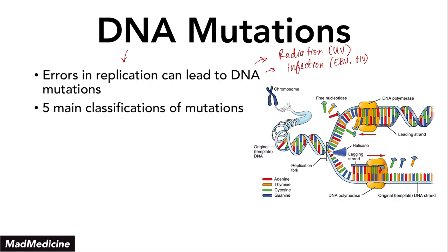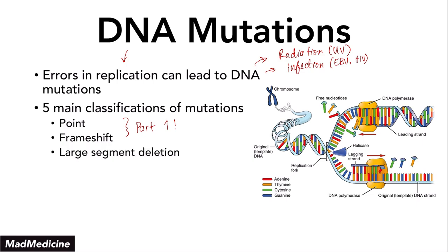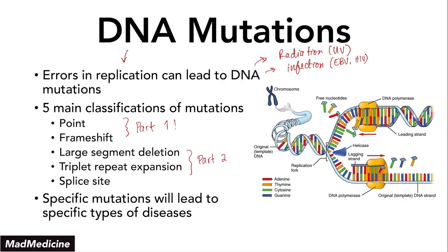When it comes to DNA mutations, there are five main classifications you need to understand. The first is point mutations, the second is frameshift mutations, and these two have already been discussed in part one of our DNA mutation lecture series, so I highly recommend you check that out. The three we're going to discuss in this lecture are large segment deletions, triple repeat expansion mutations, and splice site mutations. Keep in mind that certain diseases are dependent on a certain type of mutation, and we're going to be discussing all the diseases associated with each mutation type.